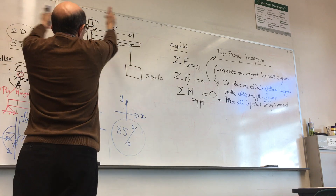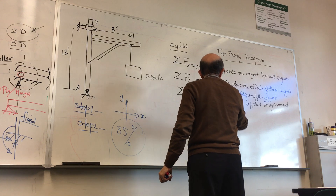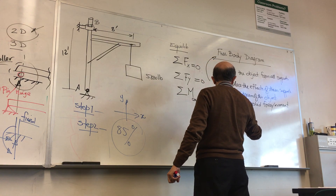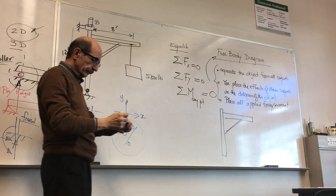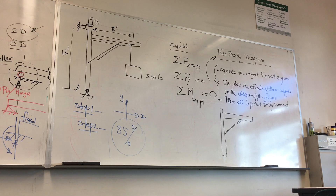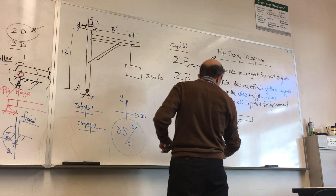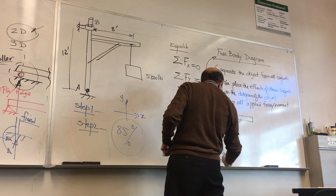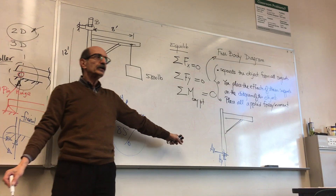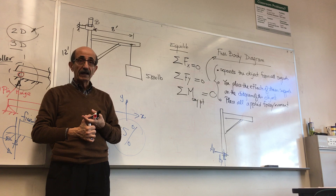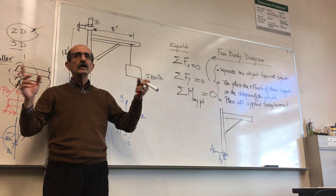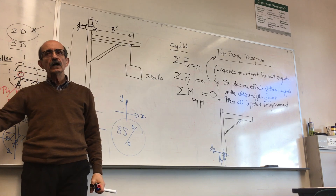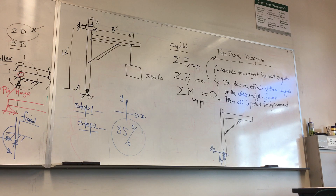Let me demonstrate that with the crane example. I'll cut the structure from anything supporting it — this is the structure. Now I'll put the effect of the supports back. This is a pin, so it represents two unknown forces. Motion is not allowed in this direction, and motion is not allowed in that direction — so there is an unknown force in each direction. The direction you choose for these forces does not matter. Once you find the unknowns, if the result is negative, the assumed direction is wrong; if positive, the assumed direction is correct.